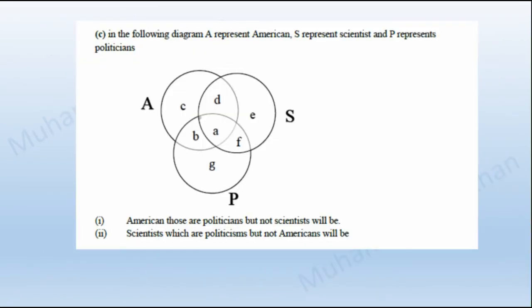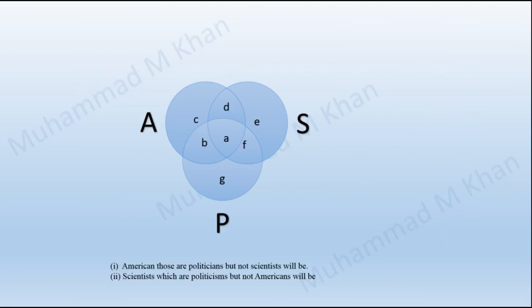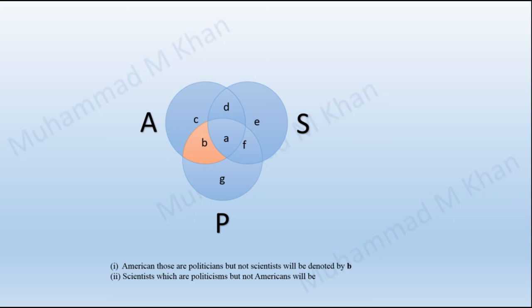Moving forward to part C of the question. A diagram was given — let me label it as per the question. Americans are represented by circle A and politicians are represented by circle P. The intersection of these two circles, shown in the highlighted area, represents American politicians. The examiner asks for Americans who are politicians but not scientists, so we exclude the area occupied by the sphere represented by S. Excluding the area covered by S, we are left with area B. So Americans who are politicians but not scientists are denoted by B.